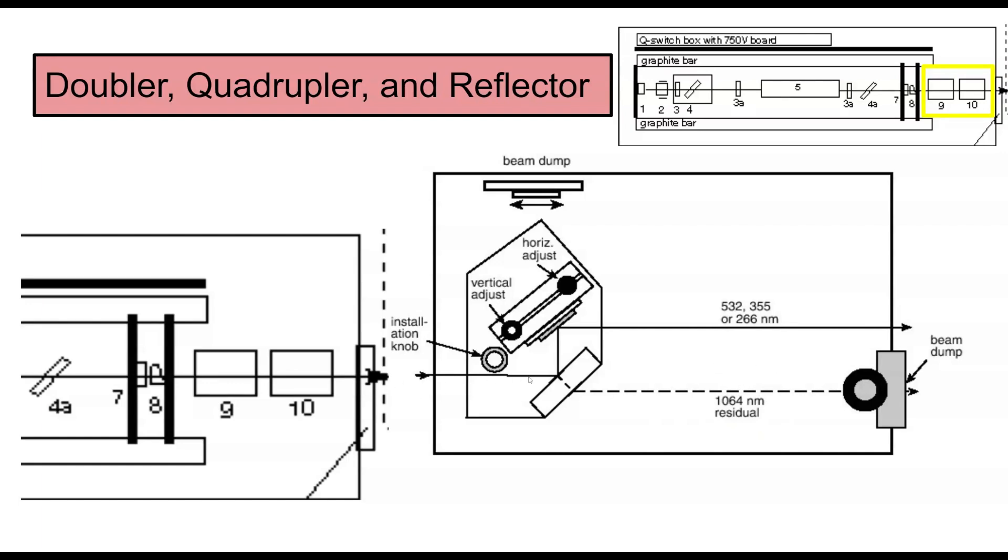This light will come through and it will hit this mirror. But this mirror does not reflect 1064, so it'll then go into this beam dump. Then it'll go into this mirror, which will actually do the same thing. And if it's 1064, it'll go into this beam dump. And hopefully we'll end up with 266, or a little bit of 532 or 355, going out this way into whatever we want to use the laser for.